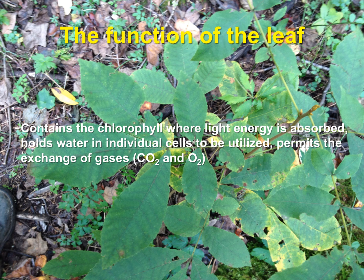Different parts of the tree play different roles in the production of carbohydrates, the gathering of environmental resources, and the transport of water and nutrients throughout the tree. Beginning with the leaf, this is where photosynthesis actually occurs. Leaves absorb sunlight, and this is where the transfer of electrons from water molecules to carbon dioxide molecules occurs. Sugar or carbohydrates are the end result of this process, with oxygen released as a byproduct.